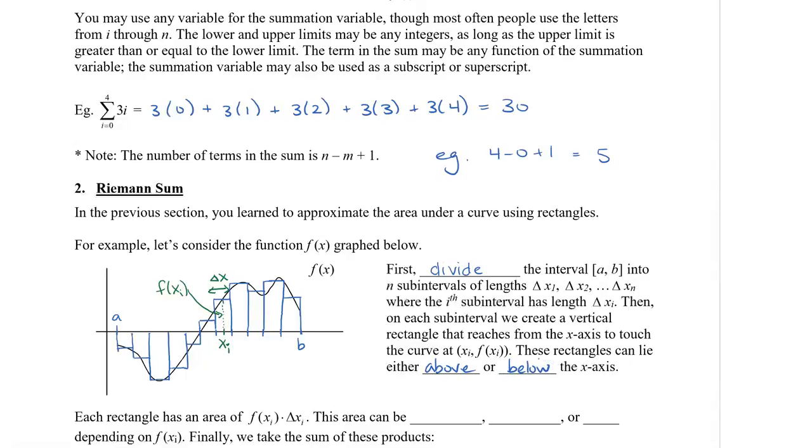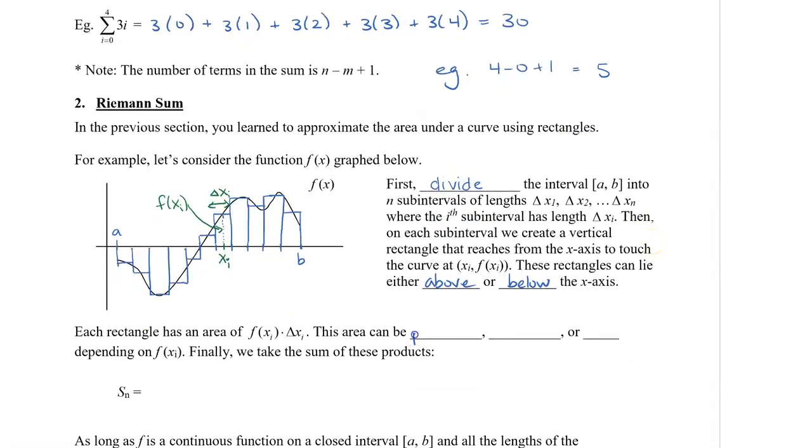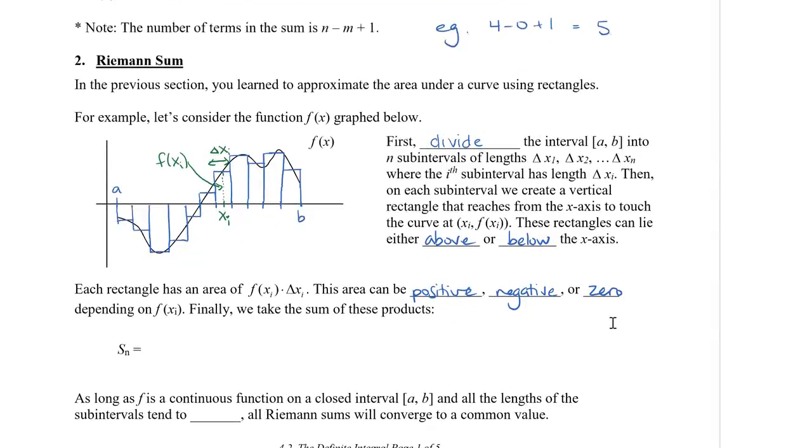Now each rectangle has an area of f of xi, which is the height, and delta xi, which is the width. So this area can be positive, negative, or zero. Depending on the location of the rectangle, whether it's above the x-axis or below.